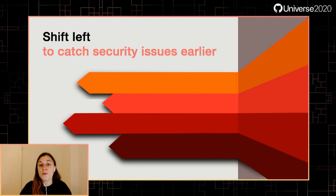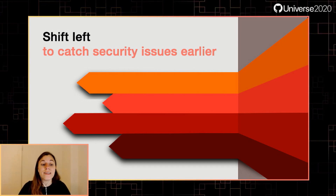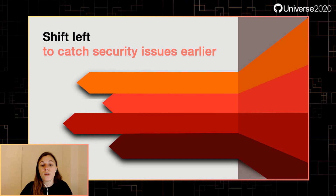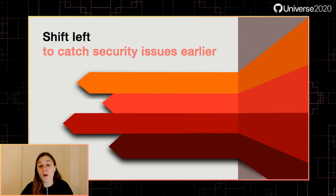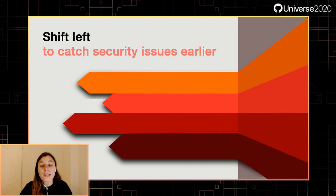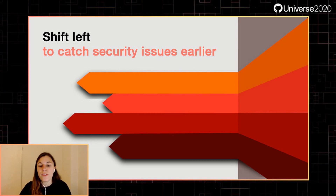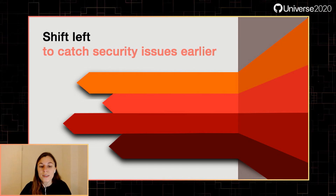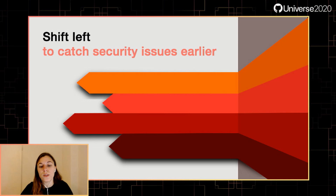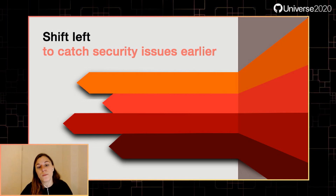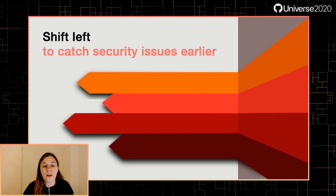Dependabot already helps you a little bit with that today. It not only warns you about a security issue in your repo's dependencies, but it does send you a pull request to respond to. That means that instead of a vulnerable dependency being an issue for the security team to follow up on, it's a pull request for the development team to review. This thinking about shifting left led us at GitHub to think: what if we could tell a developer in context what they needed to catch these vulnerable dependencies before they're introduced to begin with? Let's welcome William to show us how that's possible on GitHub now.